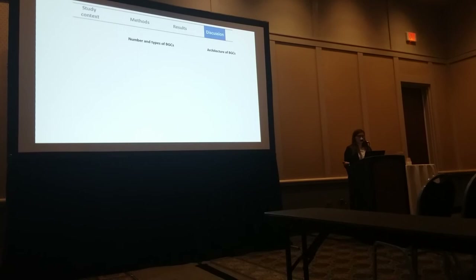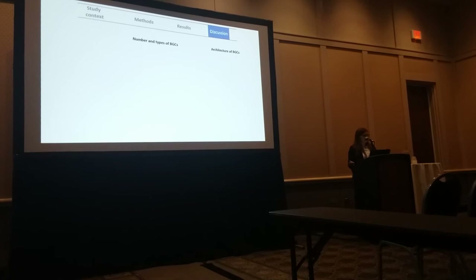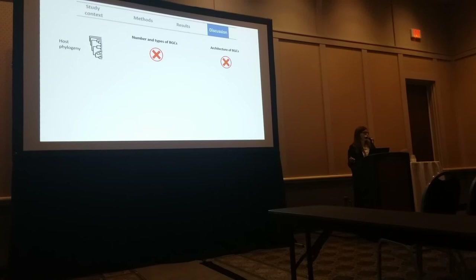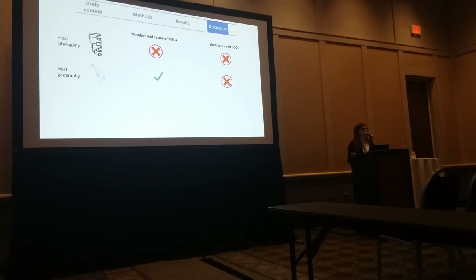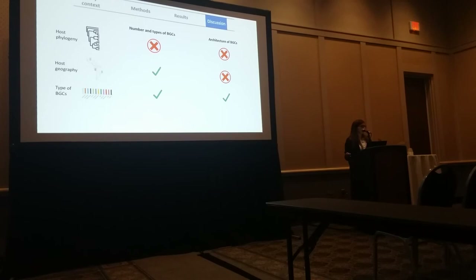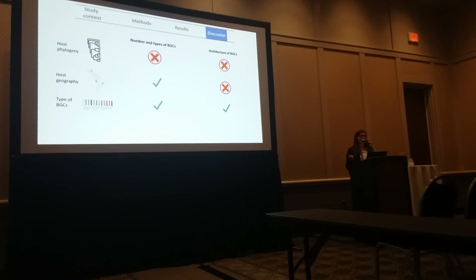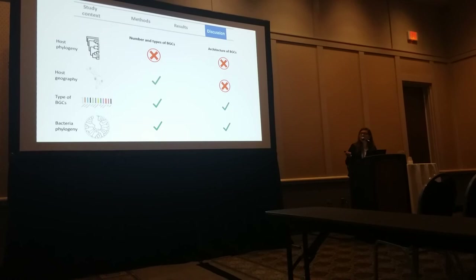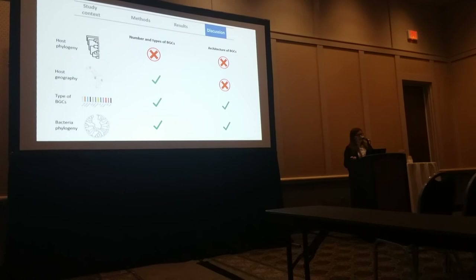To summarize, I studied the number and type of clusters in the Cephalotes metagenomes. Phylogeny was not correlated to the number, type, or architecture of the clusters. Geography was correlated to the number but not to the architecture. The type of clusters was correlated to the number — because there were different abundances between types — and also to the architecture, because groups formed according to cluster type. The bacterial order also had an impact on the architecture of the clusters.